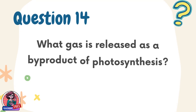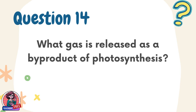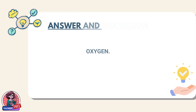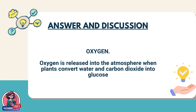Question 14. What gas is released as a byproduct of photosynthesis? Answer: Oxygen. Oxygen is released into the atmosphere when plants convert water and carbon dioxide into glucose.